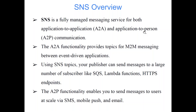The application-to-application functionality provides topics for many-to-many messaging between event-driven applications. That means you can send notifications to many applications simultaneously. For example, when an alarm hits a threshold, you might want to send an email to a particular team, send an SMS to a concerned person, and also notify a Lambda function — all at once.